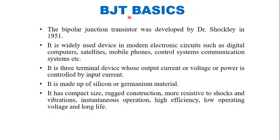BJT stands for bipolar junction transistor. It is a solid-state semiconductor device with three terminals: emitter, base, and collector. It is called a bipolar junction transistor because the current conduction is due to two types of charge carriers — electrons and holes. The bipolar junction transistor was developed by Dr. Shockley in 1951.